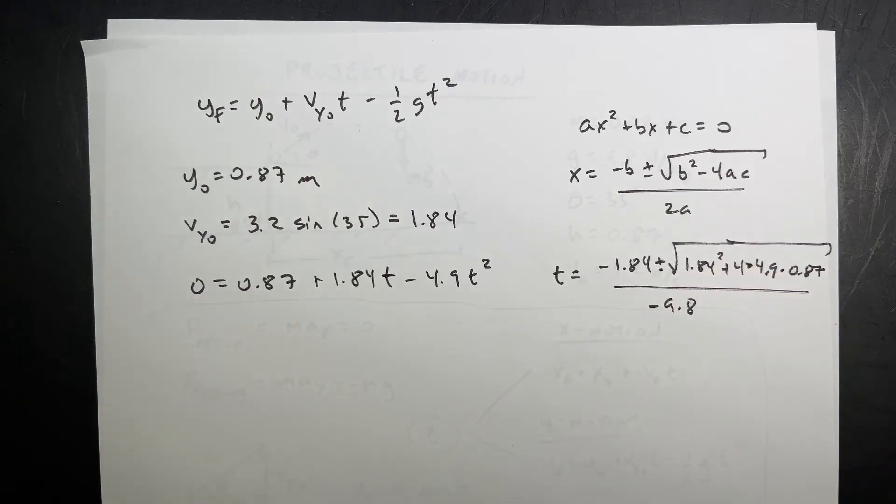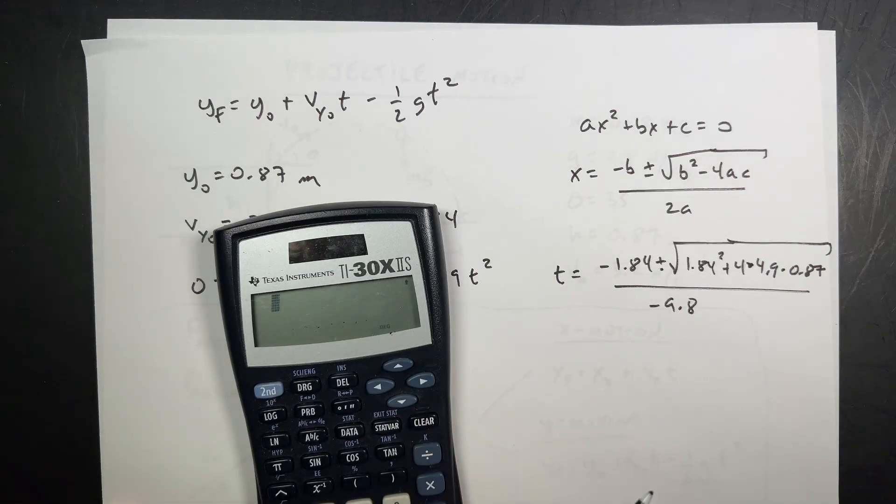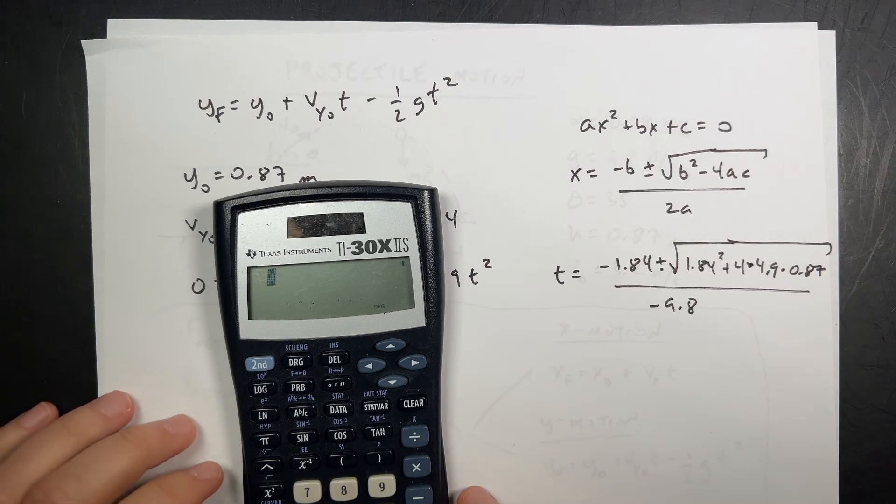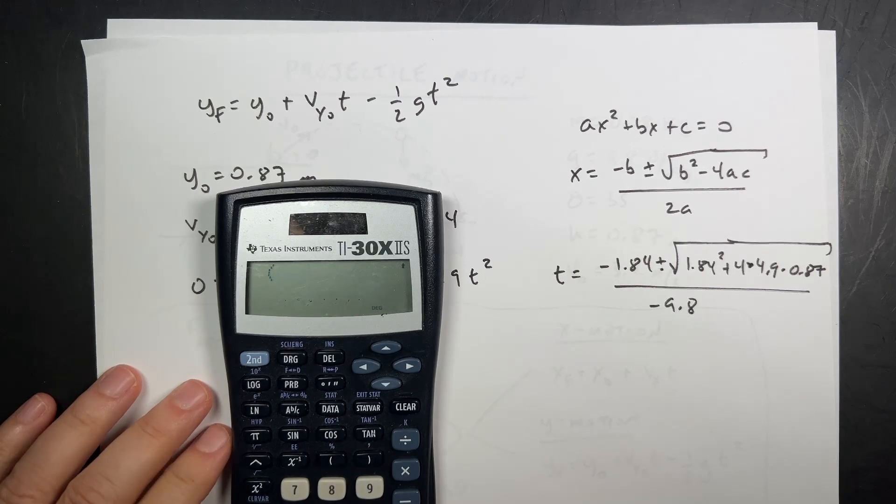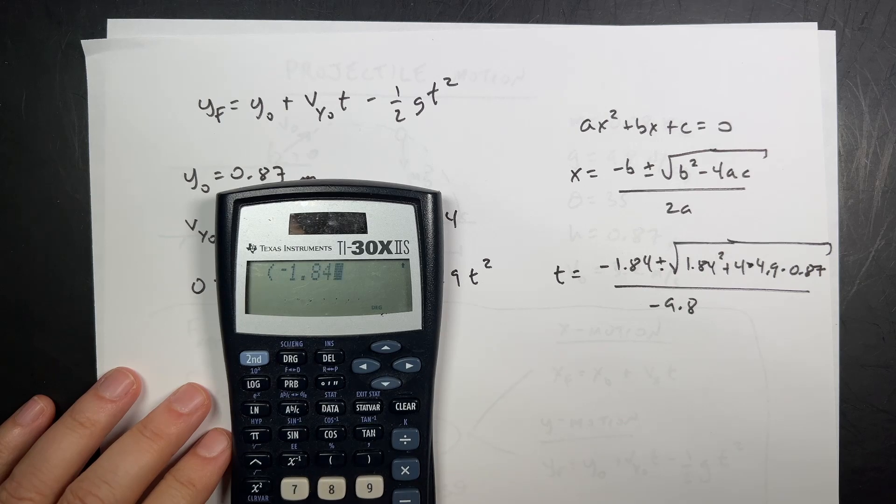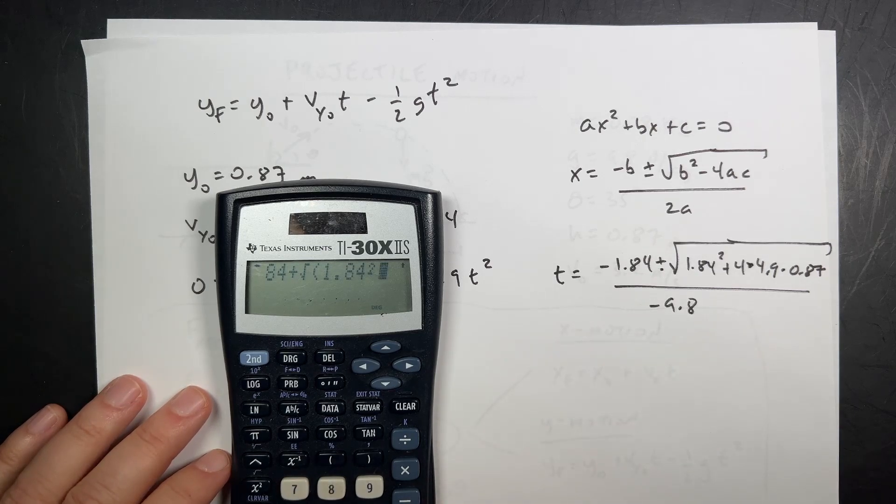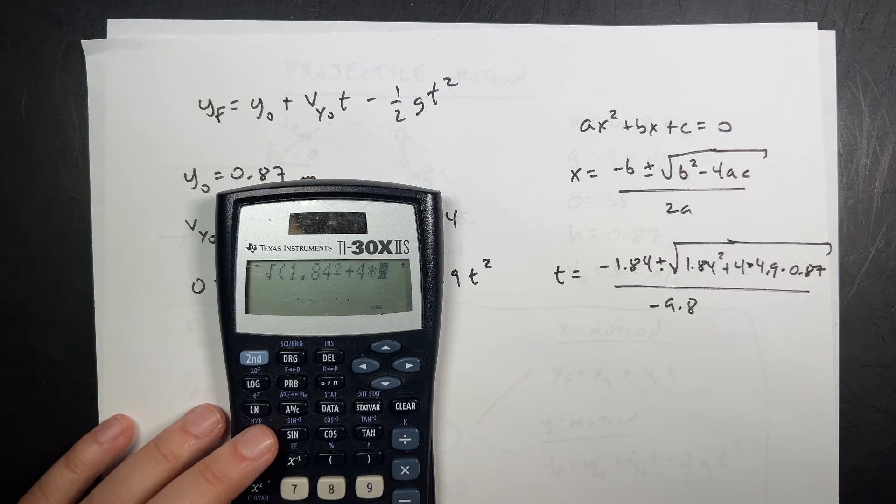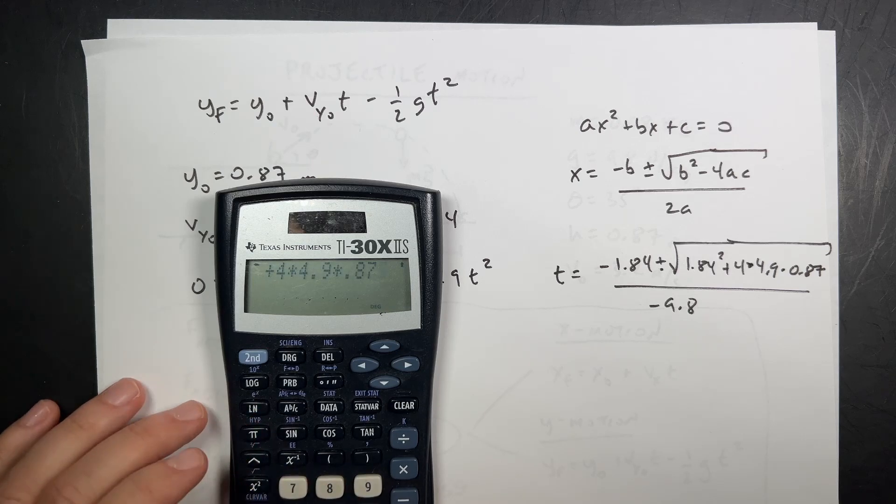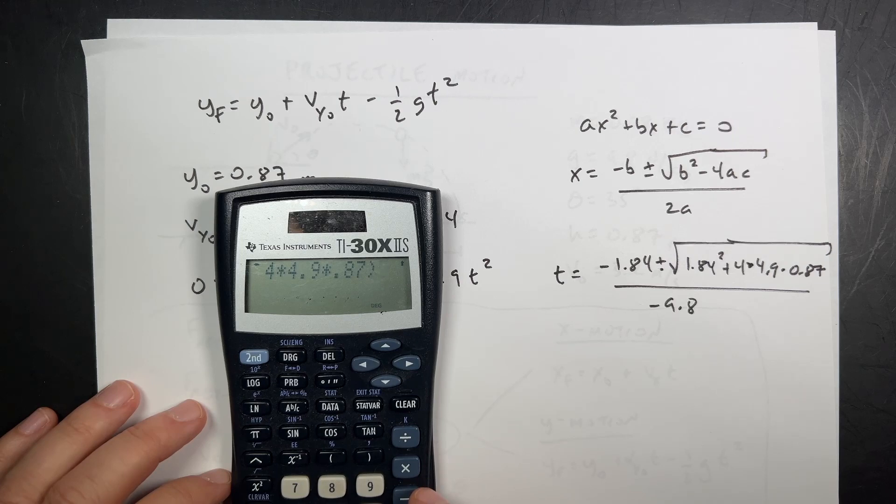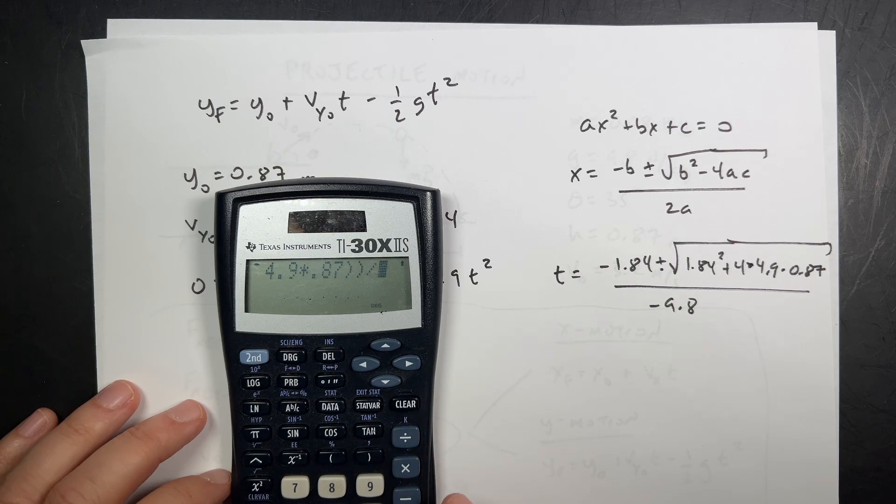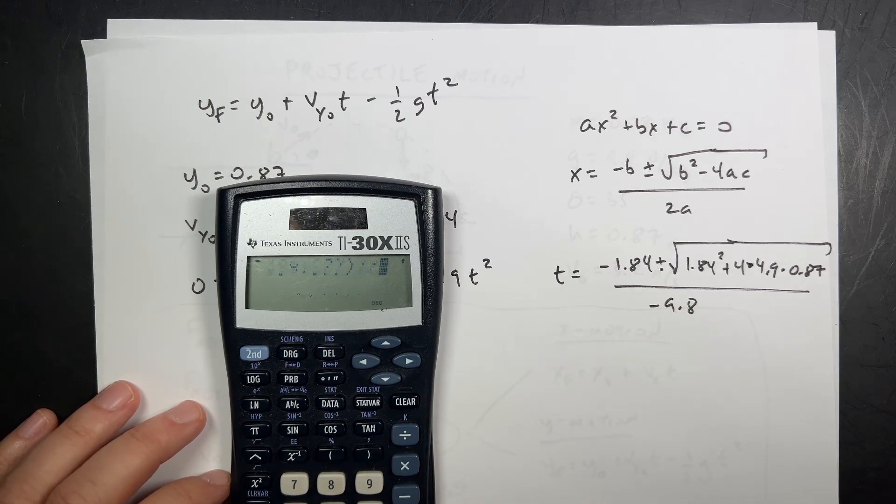Now, if you want to enter this in your calculator all at once, just be careful, okay? Just be careful. Because there's order of operations and stuff like that. There are online quadratic equation solvers that you can use. But let's just see if we can do this. Clear. I'm going to do this. I'm going to put down my pen because I'm going to make a mistake. Now, I'm dividing the whole thing by negative 9.8. Just to be safe, I'm going to put parentheses. When in doubt, parentheses. Negative 1.84 plus the square root of all this stuff. So, I have 1.84 squared plus 4 times 4.9 times 0.87 closed parentheses for my square root. Closed parentheses for this top. Divided by negative 9.8. Now, I don't need to put parentheses if I use my negative thing. If I use negative 9.8 like that.